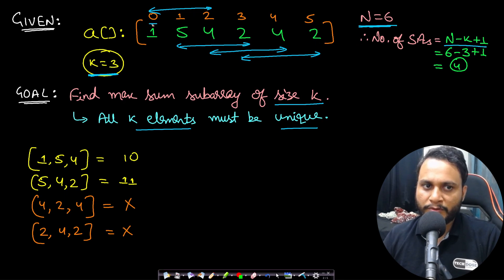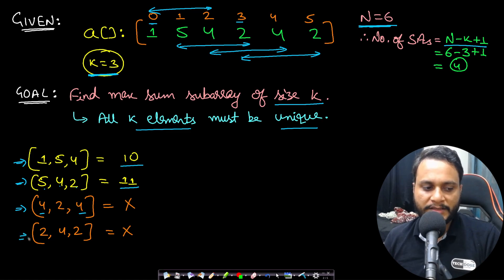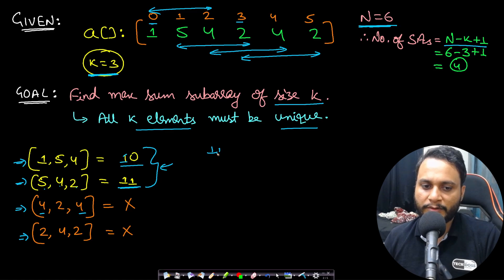The starting index can go from 0 to 3. Looking at the first subarray [1, 5, 4], the sum is 10. The second subarray [5, 4, 2] has a sum of 11. The third and fourth subarrays have repeating elements, so they are not valid. Out of all the valid subarrays, the maximum sum is 11, so the answer is 11.